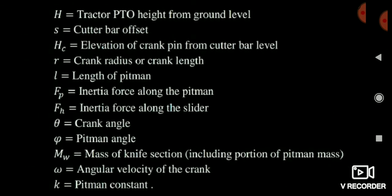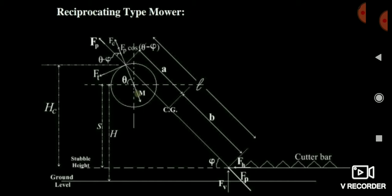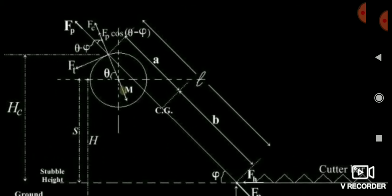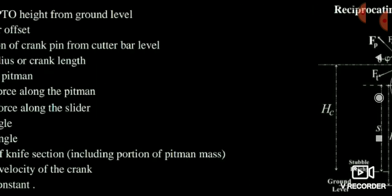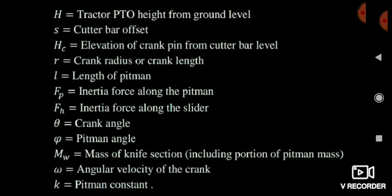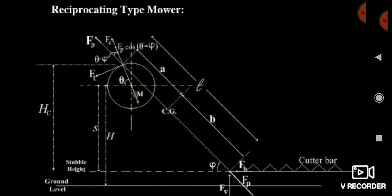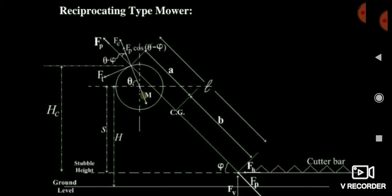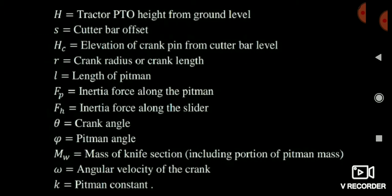Another thing: the length of pitman is L. It is the length of the pitman — our pitman length is L. And R is the crank radius. In the circular portion, the radius of this circular crank is R. Each and every one of these terms is very useful in solving the questions.